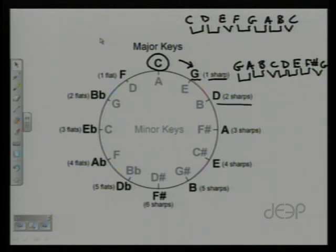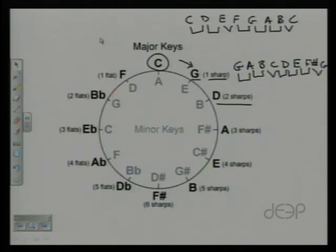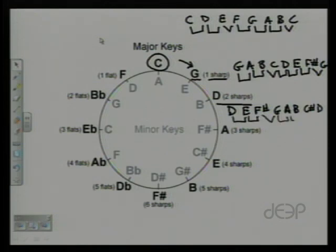D major has two sharps. We go back to this. The two sharps are always the first two here, F and C. So, if we do our D major scale, then D, E, F sharp, G, A, B, C sharp, D, promise you, whole whole half whole whole whole half. It will work for all of these.